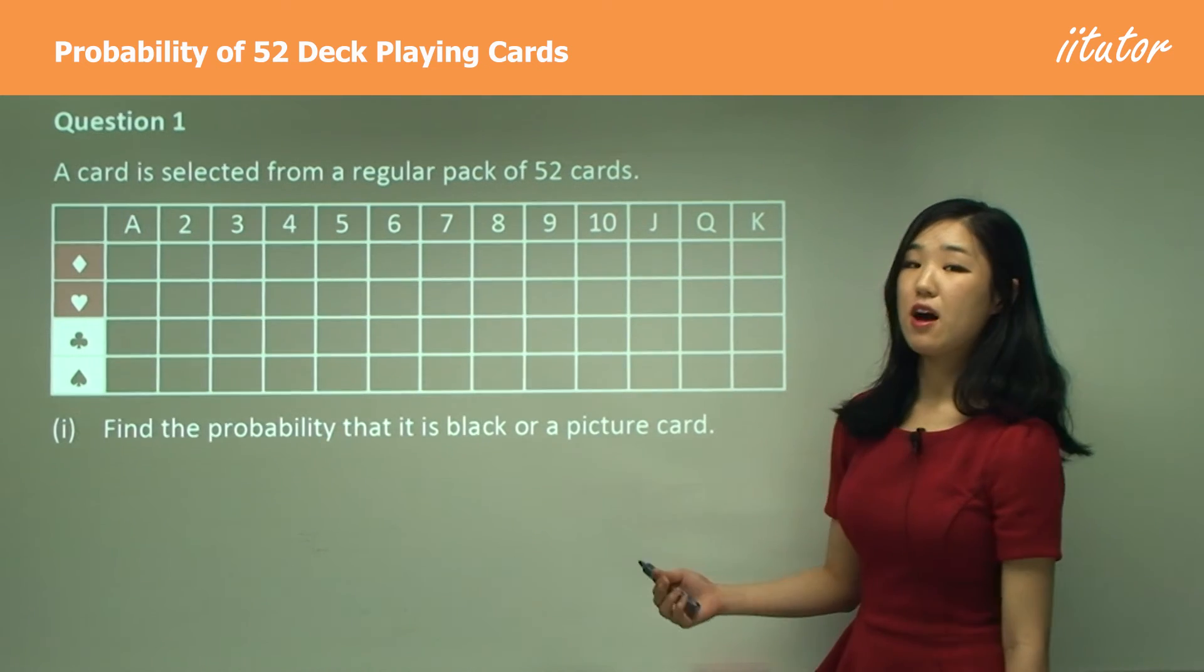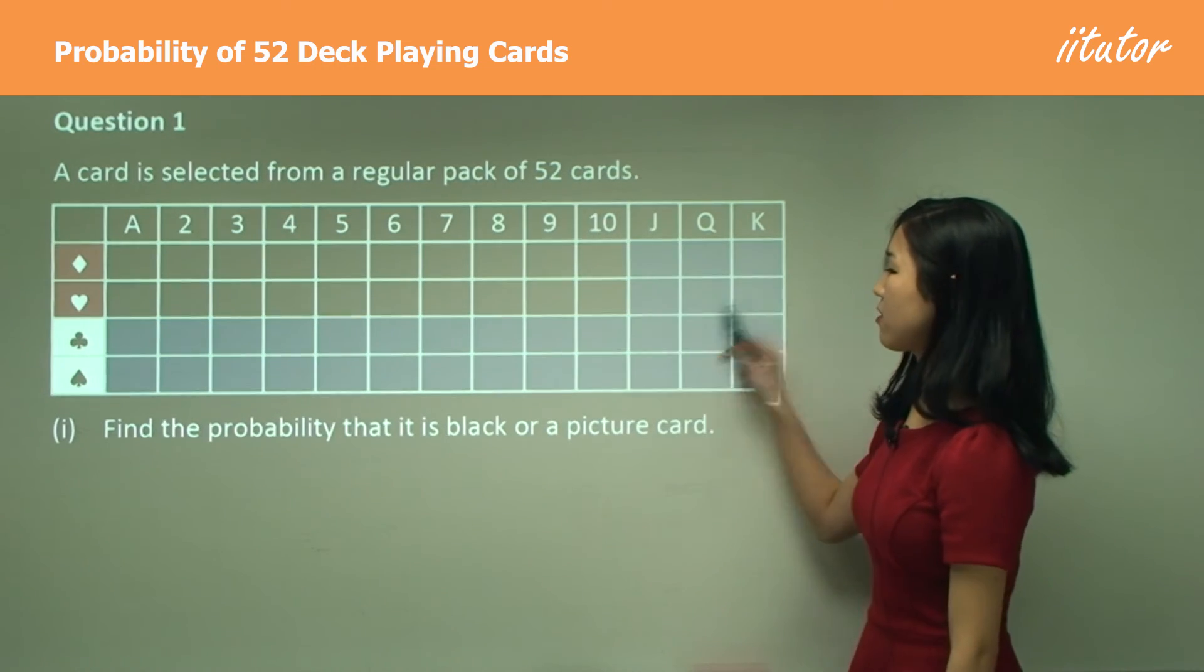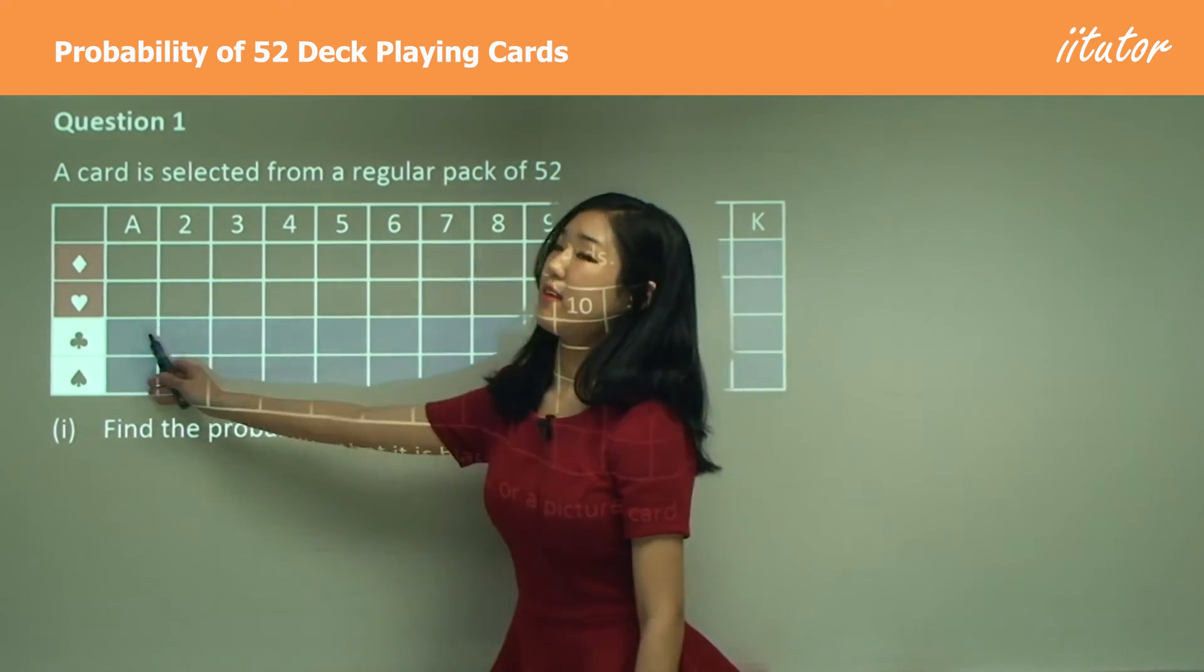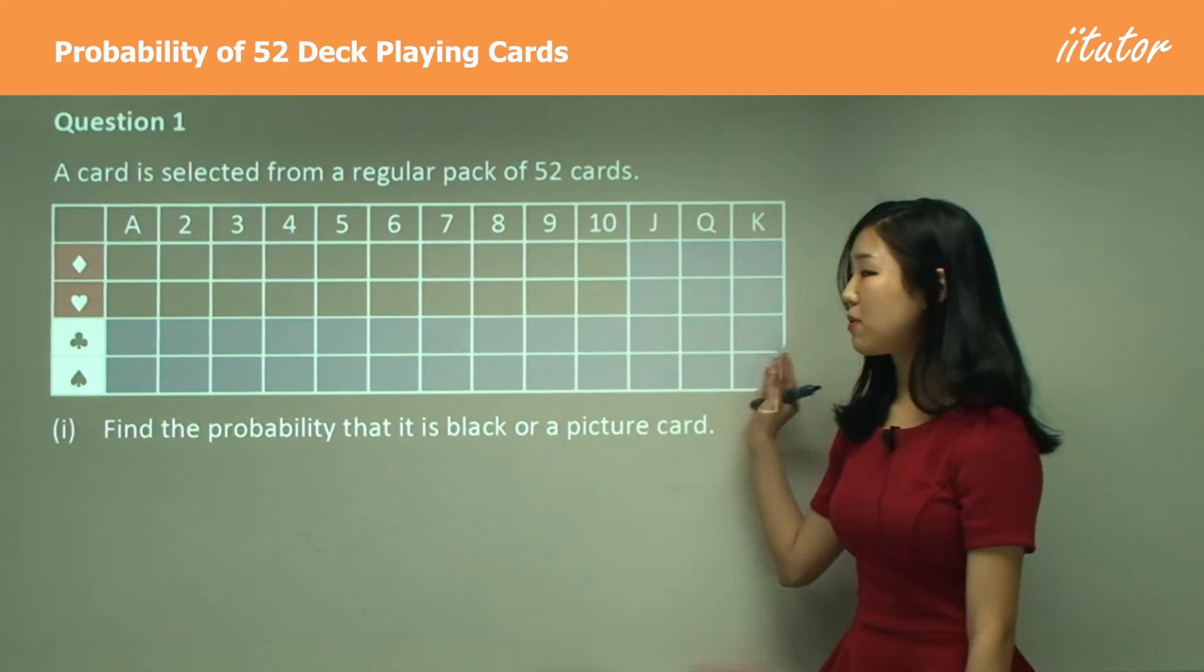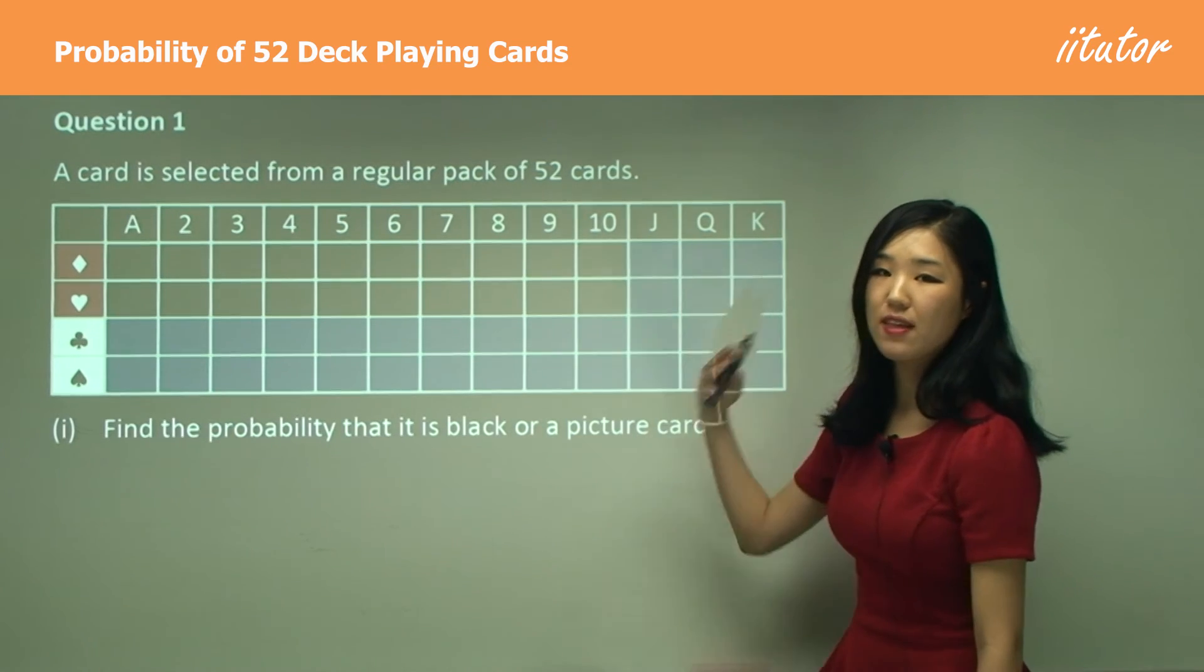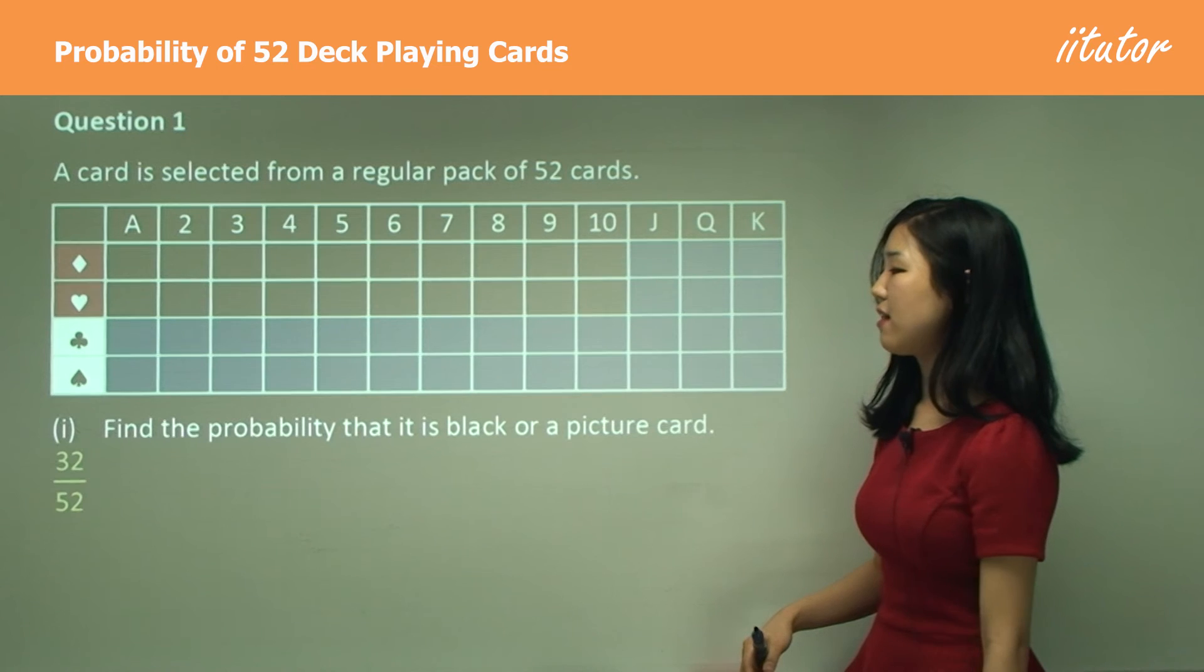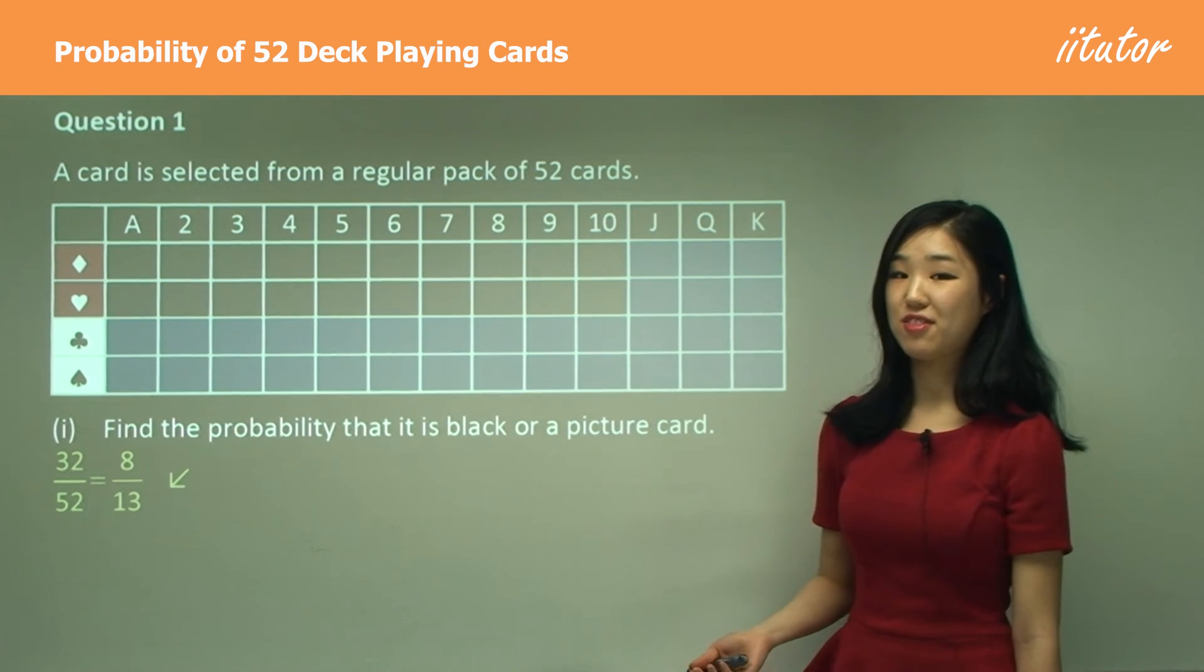Part i: Black or a picture card. So it could be black or a picture. We know that these are picture cards and these are blacks, so all of this is what we include here. It could be black or a picture card, so even if it's red, if it's a picture card, that's included. If you count them up, you should get 32. So 32 out of 52, simplified to 8 over 13.